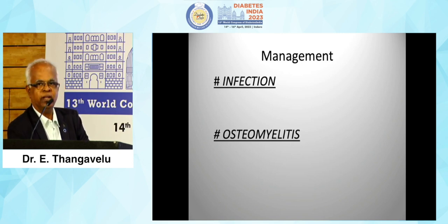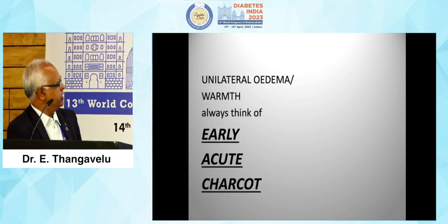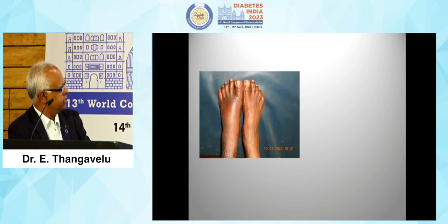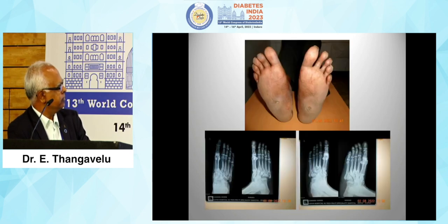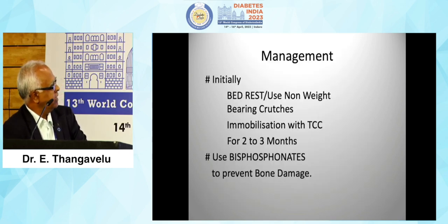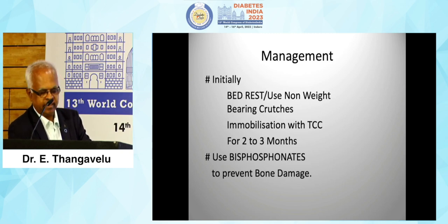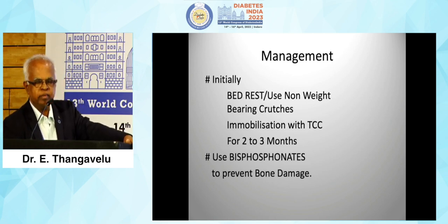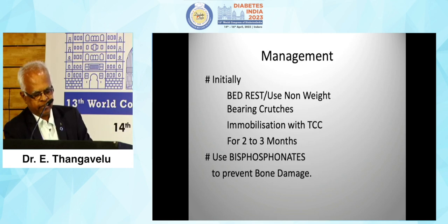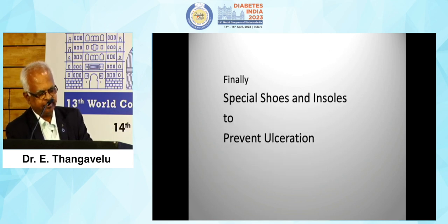The next speaker will give a detailed talk on osteomyelitis. Always with unilateral edema and warmth, think of early acute Charcot. Some early acute Charcot cases and bilateral Charcot cases can be confirmed on X-ray, showing clear-cut osteoarthropathy. Management includes bed rest with non-weight-bearing crutches, immobilization with total contact cast for a minimum of 2 to 3 months, bisphosphonates to prevent bone damage, and finally special shoes and insoles to prevent ulceration.